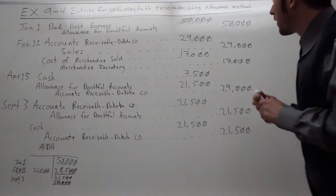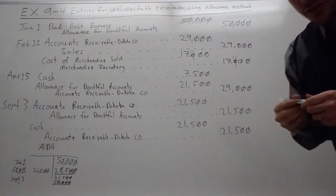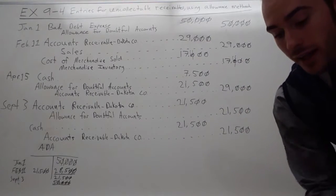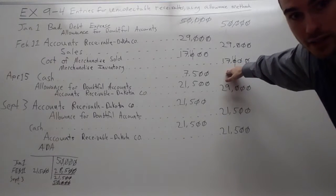Oh, that was a mistake right there. This is $17,400. My apology. And then you take off the merchandise, of course, off the books.